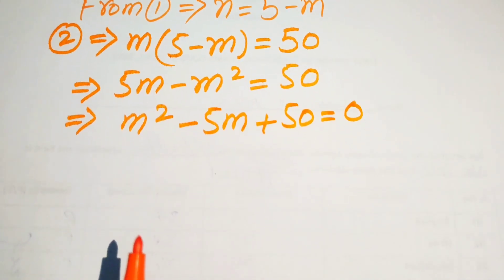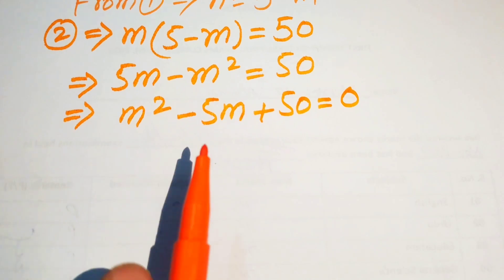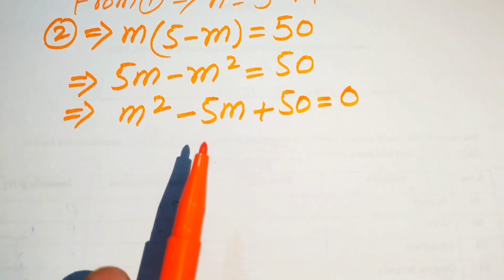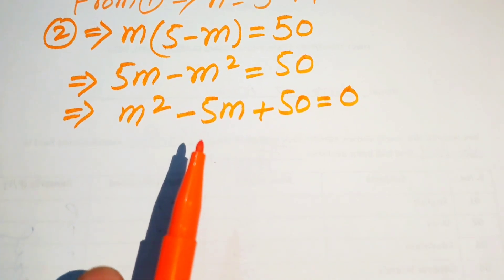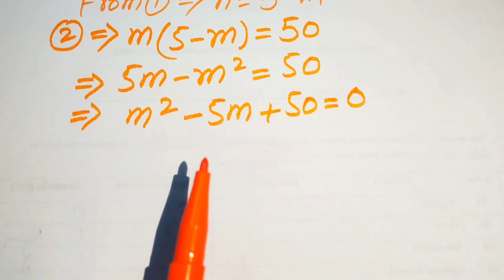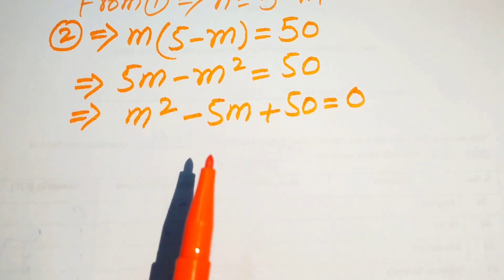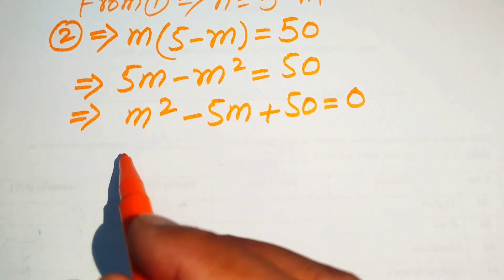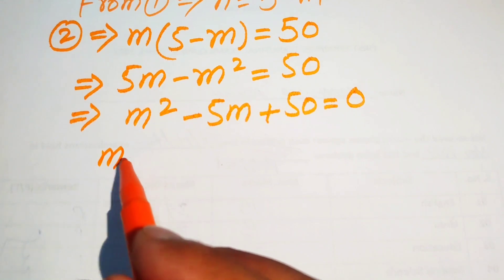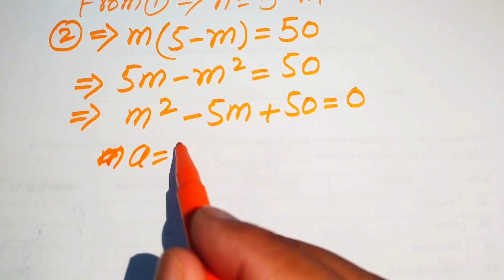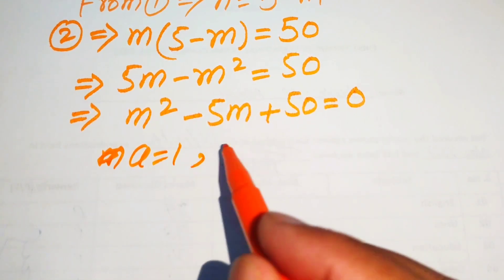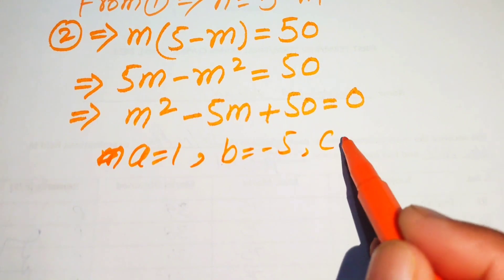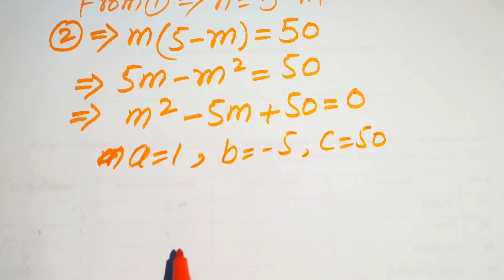Now we find the values of m using the quadratic formula. We identify the coefficients: a equals 1, b equals negative 5, and c equals 50.